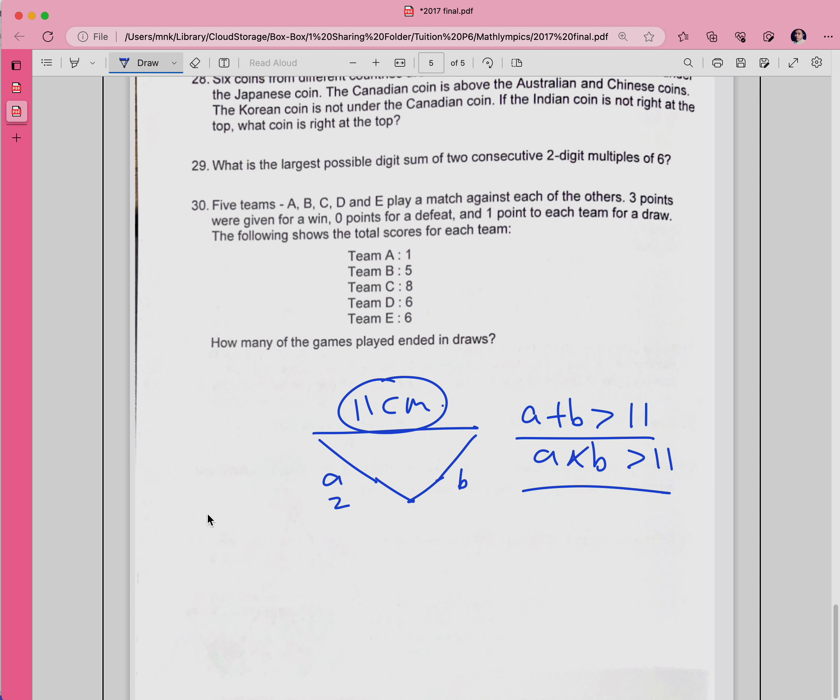So how do you go about it? Let's say if your a is 2, so what can b be? Must be 10, right? Then what else? If this is 3, what can b be? Can it be 10?